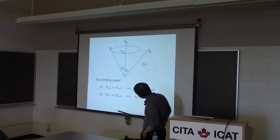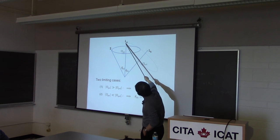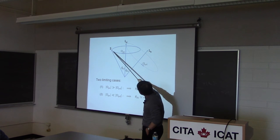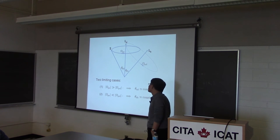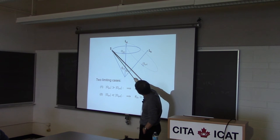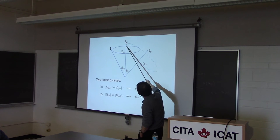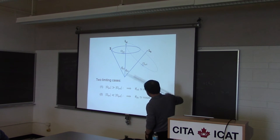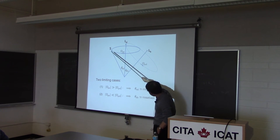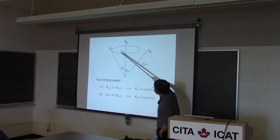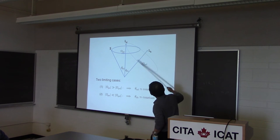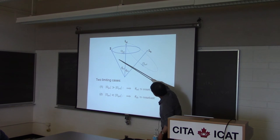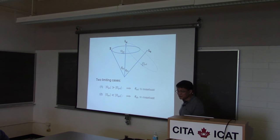In the other limiting case, where Ld is moving very fast compared with S, S cannot follow. In that case, S will just move around the binary axis Lb instead. The angle between S and Lb will be approximately constant. So that's the other limiting case — very simple, no calculation needed.